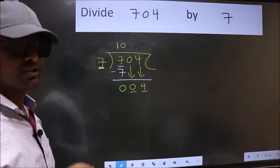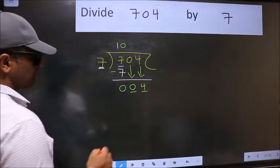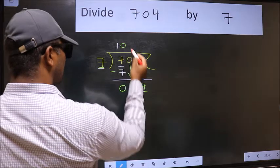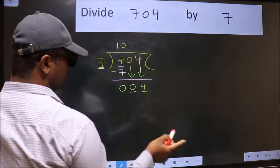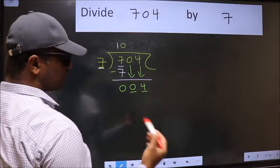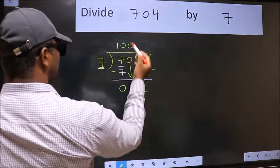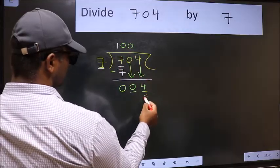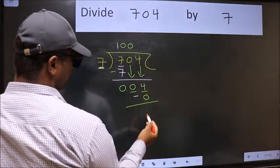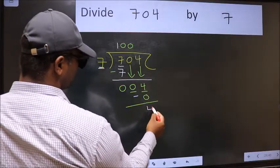Instead, what you should think of doing is, which number should we take here? If I take 1, we will get 7. But 7 is larger than 4. So what we should do is, we should take 0. So 7 into 0, 0. Now we should subtract. 4 minus 0, 4.